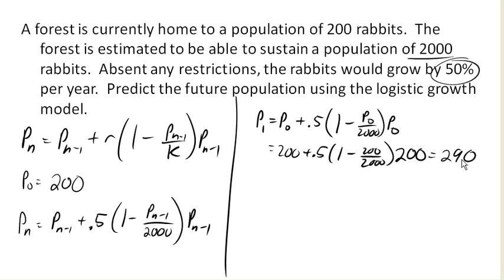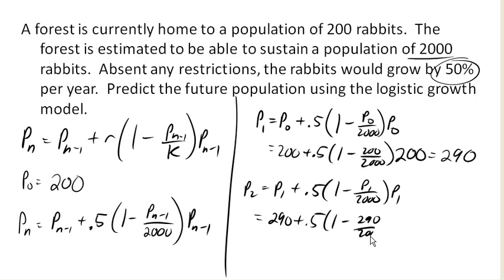For the next year, we would do p_1 plus 0.5 times (1 - p_1/2000) times p_1. This is 290 now.